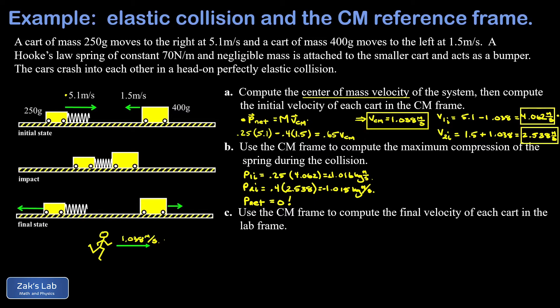Collisions with zero net momentum are particularly easy to analyze. For part b, maximum spring compression occurs when kinetic energy is at a minimum. Because net momentum is zero in the CM frame, the minimum kinetic energy is when both carts are completely stationary — v1 = 0 and v2 = 0 in the CM frame. At that moment all the kinetic energy has converted to spring potential energy.